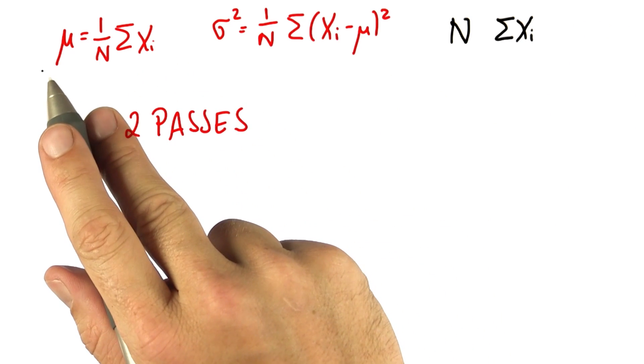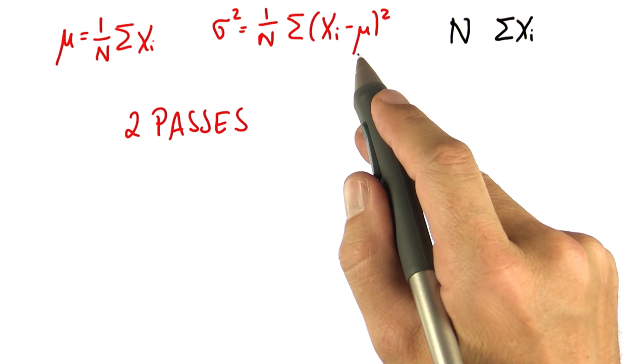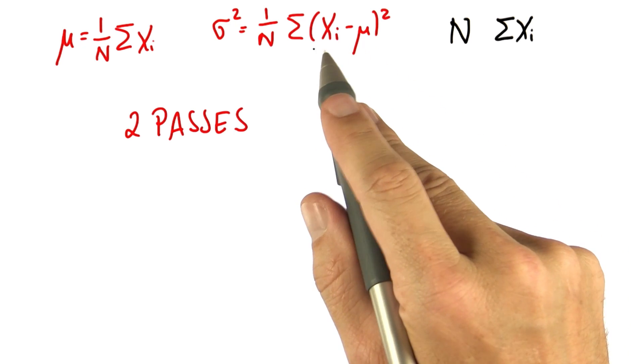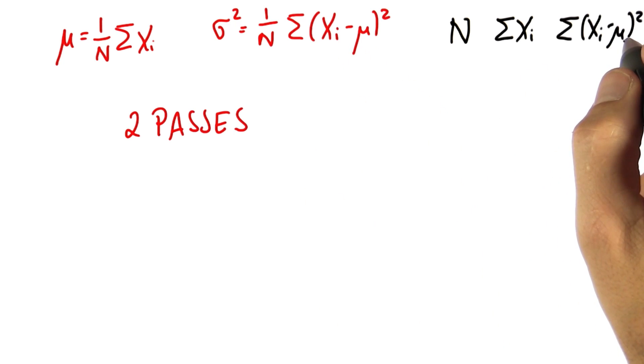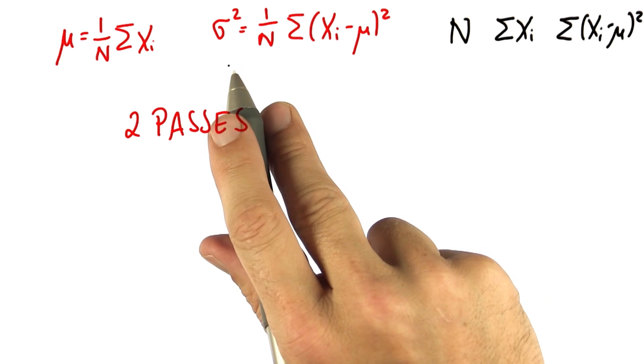And once I've done this, I know μ, and then I can finally plug it in here, but now I have to go through the data again and compute this guy so I can finally get to my variance.